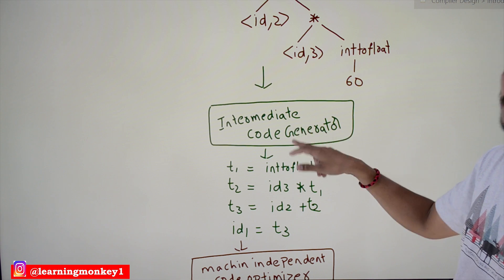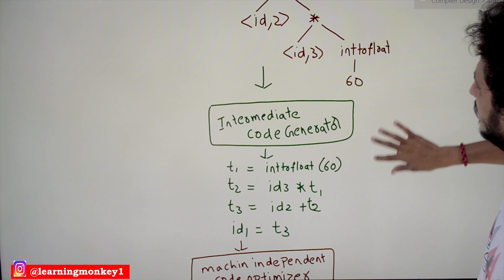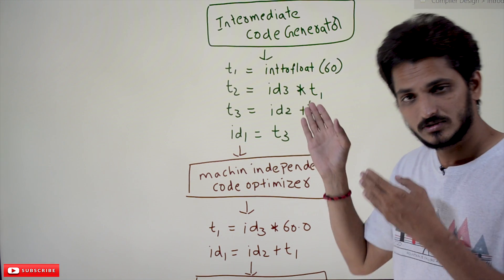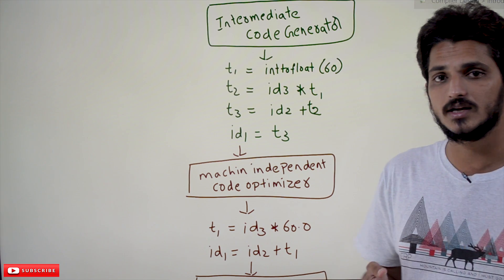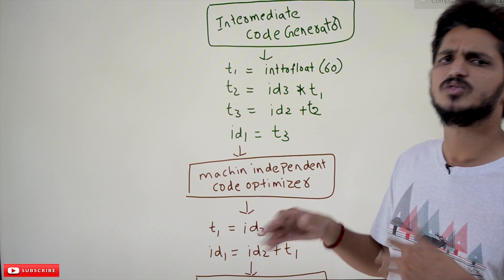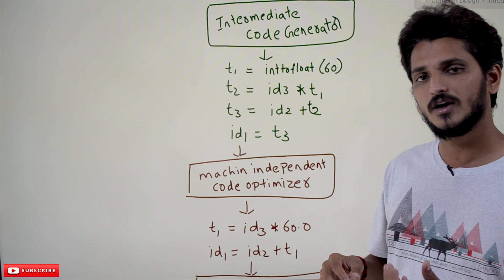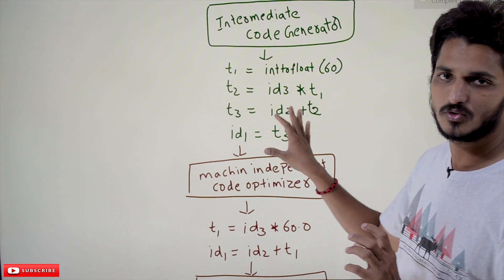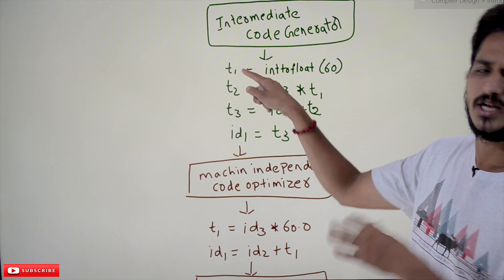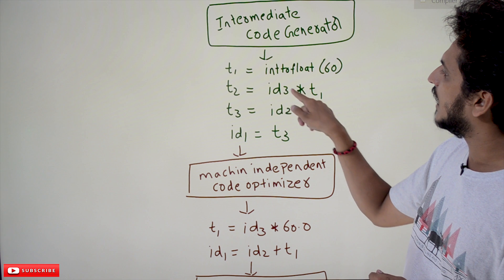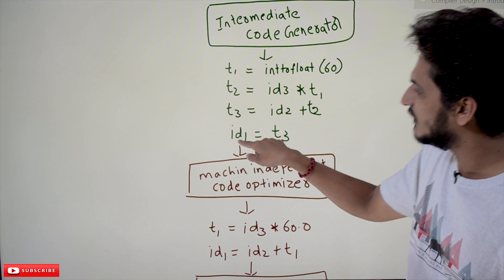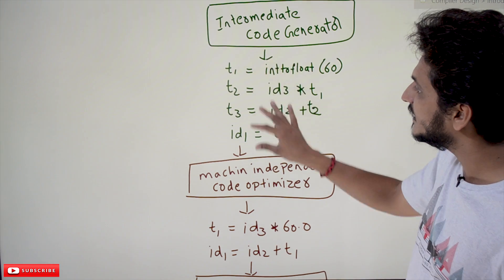The output from the semantic analyzer is given as input to the intermediate code generator. Based on the syntax tree, it generates an intermediate code. Don't think this is the final output. It is called three-address code — there are many formats for intermediate code generation, but three-address code is what's in the syllabus and textbook. For example: int_to_float(60) → t1; id3 * t1 → t2; id2 + t2 → t3; t3 → id1. This is the intermediate code — not the final machine code.